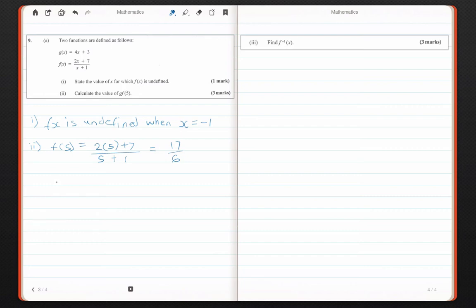Now we're going to plug this now into g. So g 17 over 6 is equal to 4 times 17 over 6 plus 3. If we do our calculations, that should be 34 over 3 plus 3. I can write 3 as 9 over 3, which would give me in total 43 over 3. That is my answer.